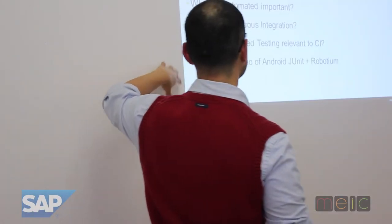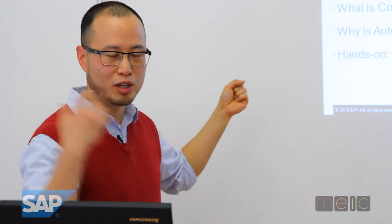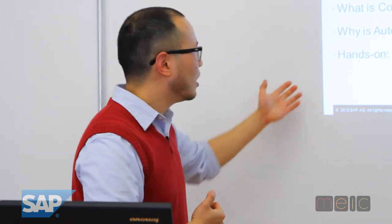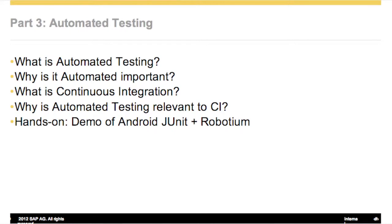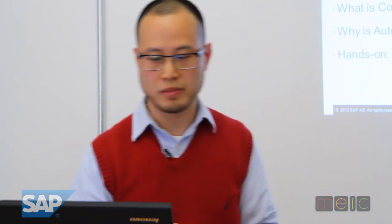In this automated testing section, we're going to cover five points: what is automation, why is automated testing important, what is continuous integration or CI — which you as developers are probably well hooked into — the relevance of automated tests to continuous integration, and then I'll show you a little bit about JUnit, Robotium, and some other tools that exist in mobile. I'm choosing to use Android and Robotium to demonstrate some principles here.